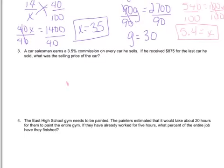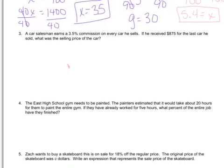So now we're going to go on to where we're going to do some problems that involve using a percent bar. So number three, a car salesman earns 3.5% commission on every car he sells. If he received $875 for the last car he sold, what was the selling price of the car?